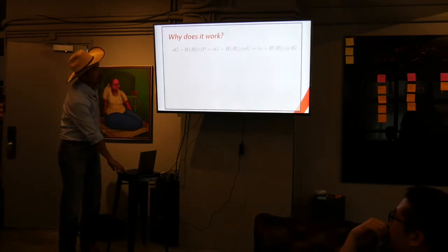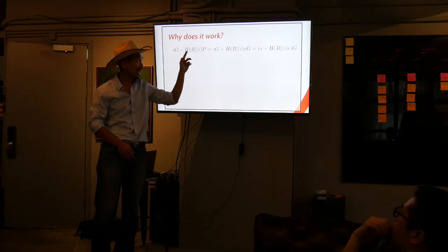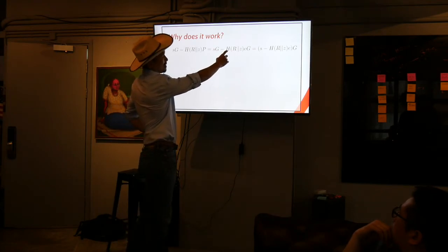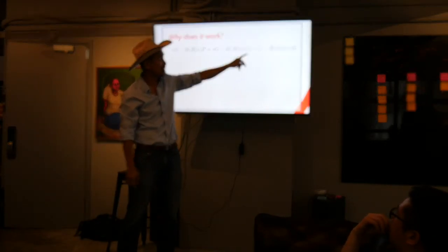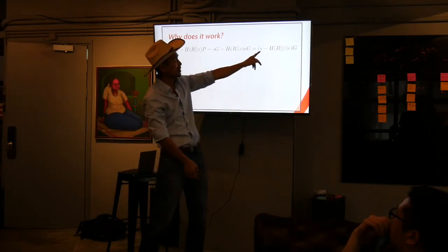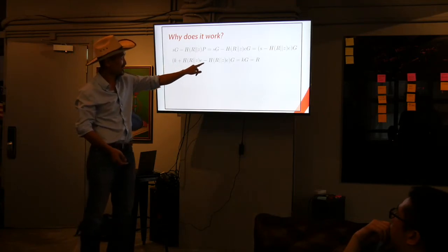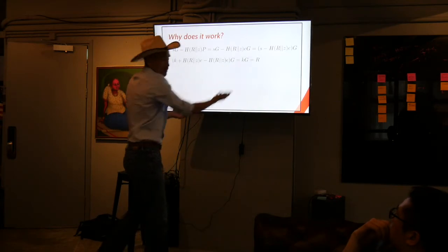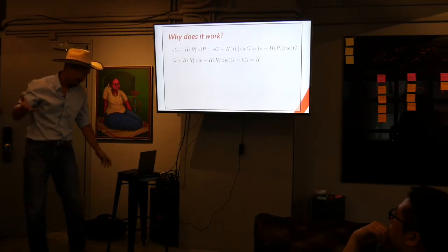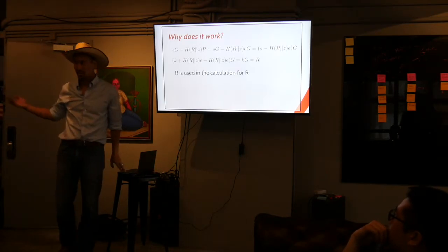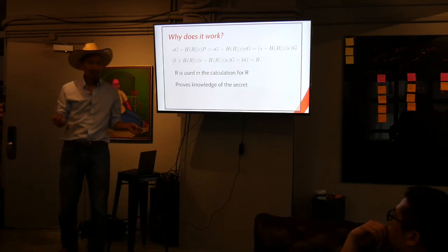And the reason why this works is because SG minus, this is the formula from the verification, SG minus the hash of R, Z, P ends up being SG minus hash of R, Z, and P is the same as EG, right? Because that's the public key, and E is your secret, EG. And then you can sort of group the terms together and take out G from both and get S minus H of R, Z, and E. And then S has a definition, which is K plus H of R, Z, and E. And these two terms cancel out. And you get KG. And KG was defined as R. So it comes out to the same thing because we specifically made S so that it would come out to the same number. And that's sort of, R is used in the calculation of R, and therefore we know the secret, and we were able to manipulate everything going forward. And that proves knowledge of the secret.